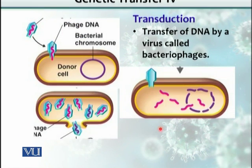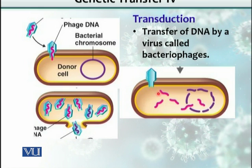There are viruses that can infect bacteria. These viruses are called bacteriophages, or simply phages. As you can see here in this picture, this is a phage or virus that is infecting and injecting its DNA into the organism, and then the organism can synthesize whatever is required for viral synthesis or replication.